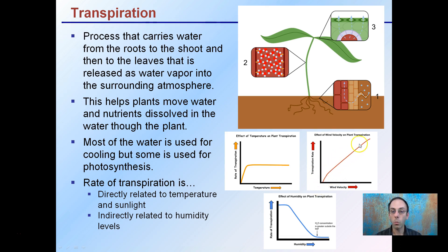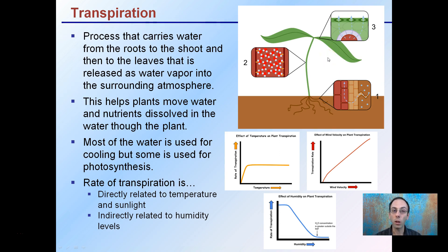Wind velocity also affects transpiration — as wind increases, it increases the amount of water being evaporated out. Transpiration is indirectly proportional to humidity levels: as humidity increases, the transpiration rate decreases. This is simply because if there's more moisture in the air, there's no place for that water vapor in the leaf to go. Think of being outside on a humid summer day — clothes stick to you because the high humidity doesn't allow water to evaporate well into the external environment.